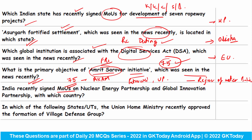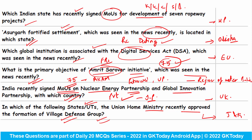India recently signed memorandums of understanding on Nuclear Energy Partnership and the Global Innovation Partnership with which country? We have signed these MOUs with the UK, to counter the increasing influence of China in various regions. Under this, India will involve the private sector for investment in the Indo-Pacific region. The Union Home Ministry recently approved the formation of village defence groups in Jammu and Kashmir. These groups will be created to respond to threats in areas where local police presence is thin, and usually consist of 8 to 10 members.